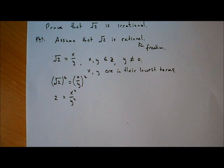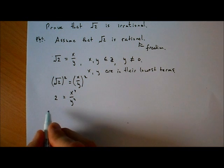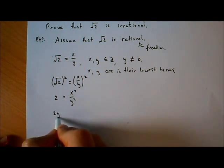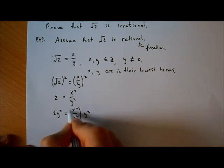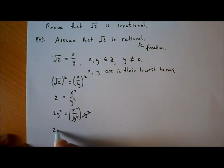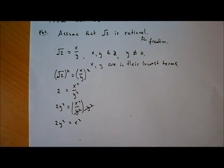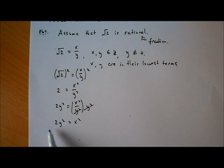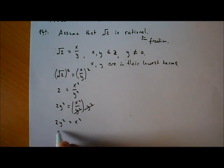We've got a fraction there, so let's multiply both sides by y squared to get rid of it. We end up with 2y squared equals x squared. Now, x squared is equal to twice something - twice y squared - so that must mean that x is an even number, because any even number is twice something.